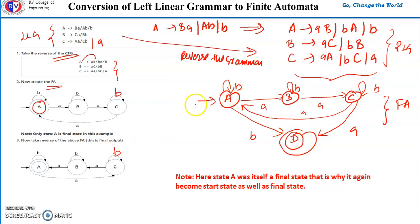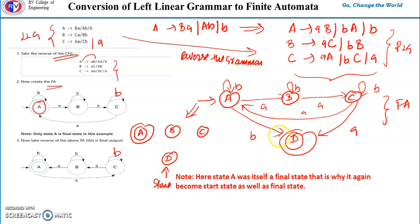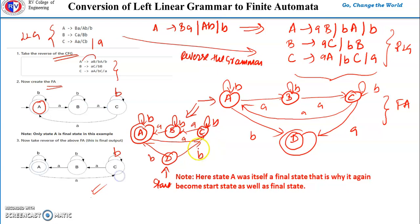When we reverse this second finite automata, D becomes the start state and A becomes the final state. All edge directions are reversed; self-loops remain the same. You can see that both methods produce machines that generate the same language — both are correct. You can either introduce a new final state or use the first method. Hope you have understood the concept of conversion of left linear grammar to finite automata. Thank you for watching.